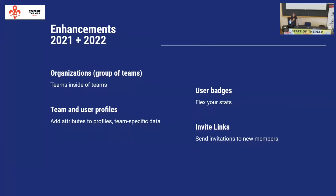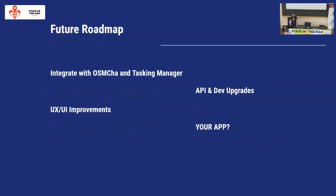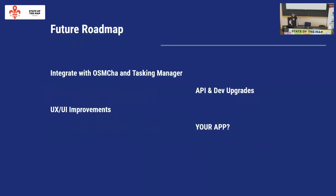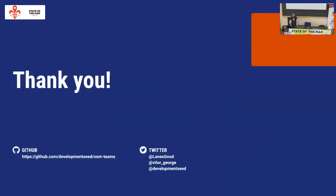We also have invite links to allow users to join from a more directed level from the team admin. We're working on badges to allow users to show off certain attributes or stats. What's next? Integrations with other applications, lots of UX/UI improvements, some backend and DevOps upgrades, and integrations with apps like OSM-CHA and Tasking Manager, and your application if you'd like to use Teams. We invite you to check out the docs — they're on GitHub.